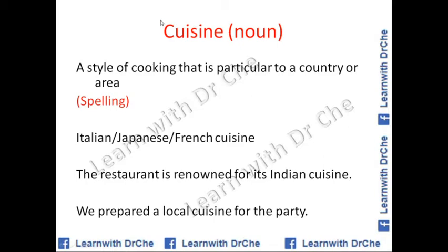Our first word in food and diet is 'cuisine.' Look at the spelling: C-U-I-S-I-N-E. This is not the same as 'cousin' — the pronunciation and spelling are different. Cuisine is a noun, and it will mostly be used in the topic of food and diet. It means a style of cooking that is particular to a country or an area.